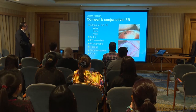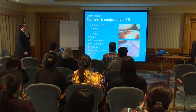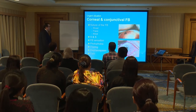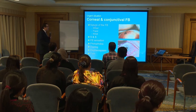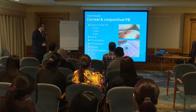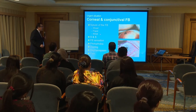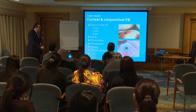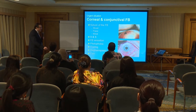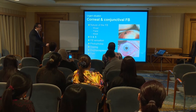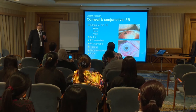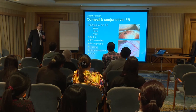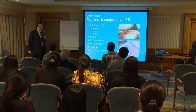Next is corneal and conjunctival foreign bodies. Foreign bodies can be from wood, small pieces of paper, or metal. Sometimes you can see them, sometimes you cannot because they are very small. I remember one VIP patient who came to our hospital saying he had foreign body sensation. The doctor examined him carefully and told him there was no foreign body.